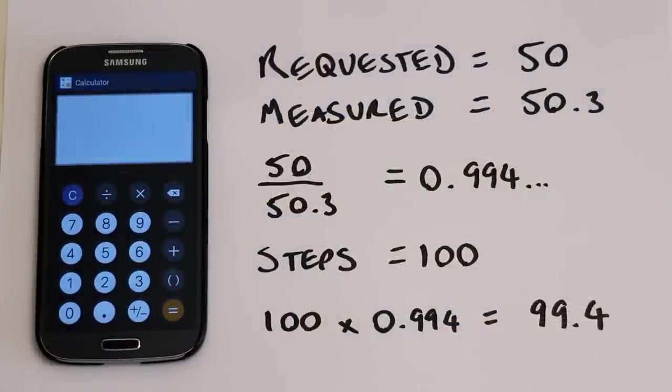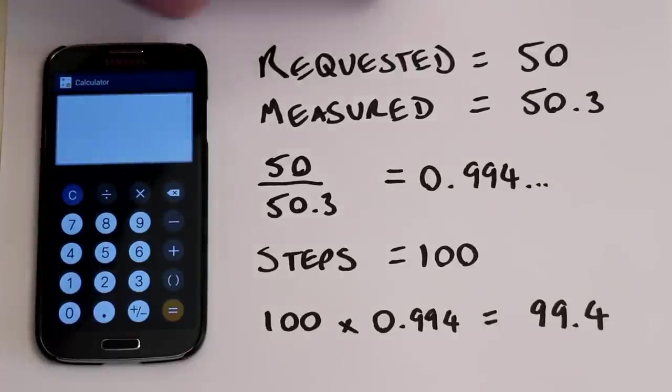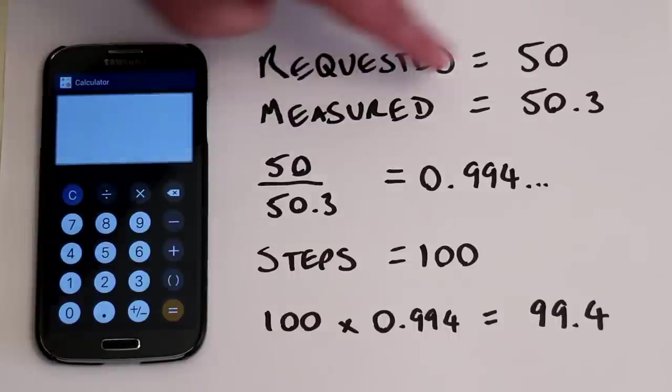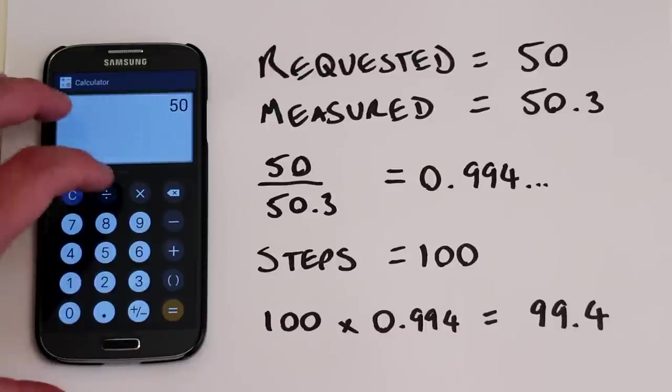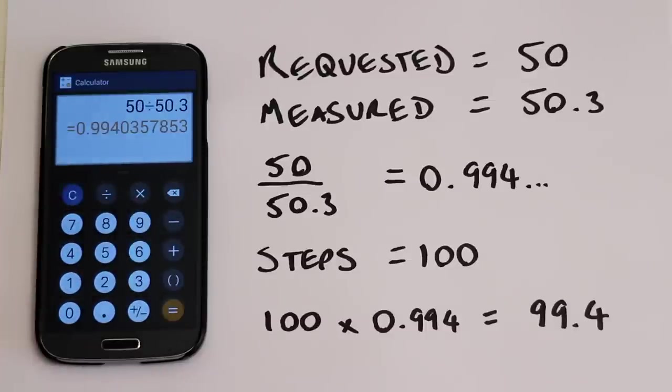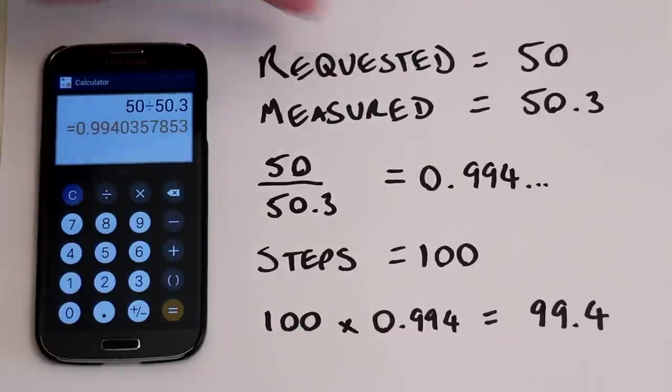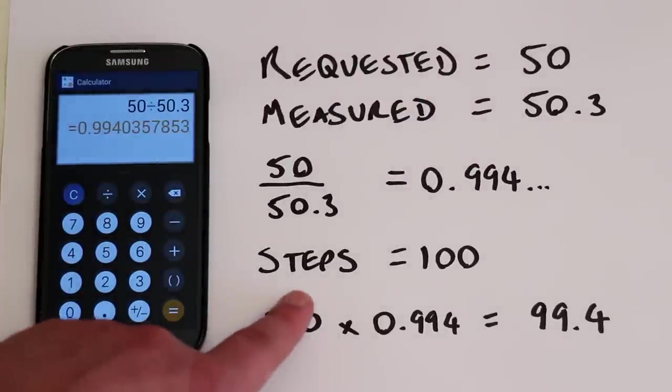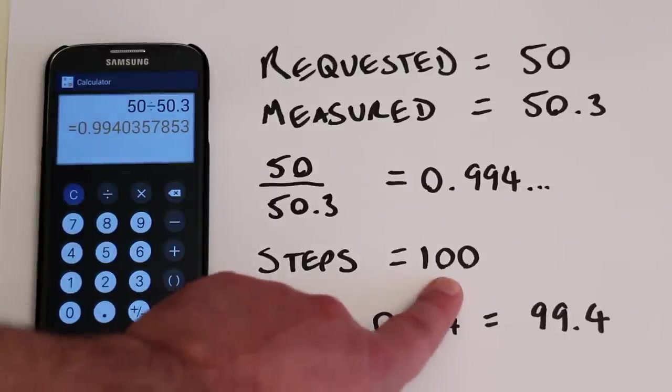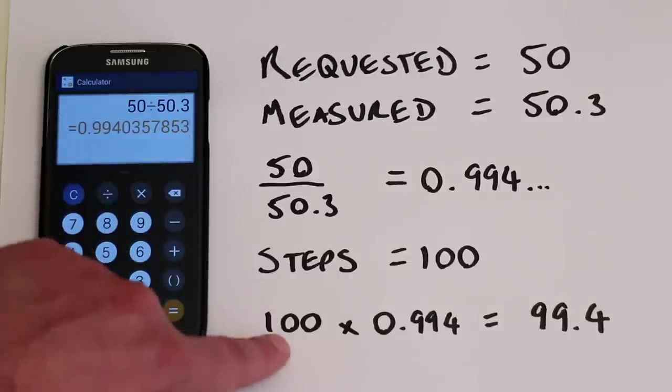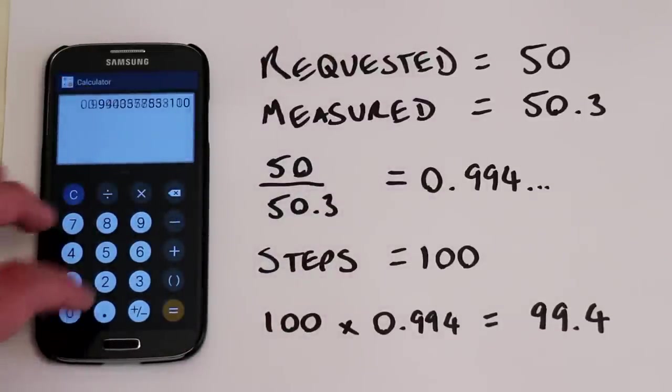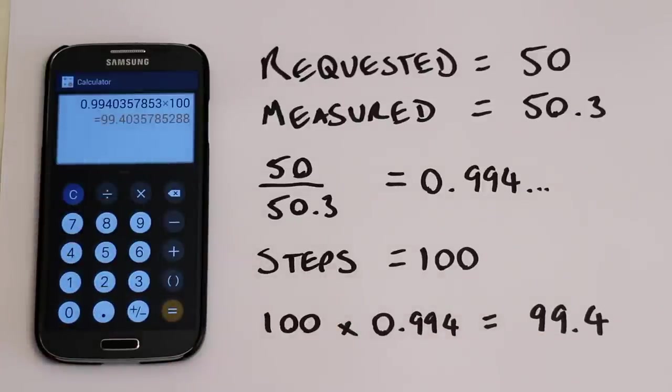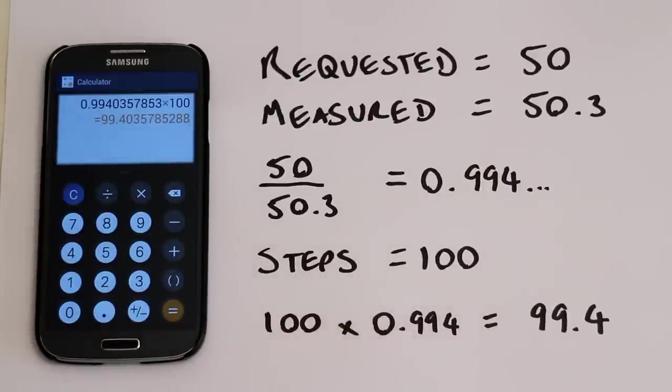To calculate the new steps that we need to insert into Marlin, we need to do a couple of quick calculations. We requested 50 mm. We measured 50.3 mm. So we divide the requested by the measured. So 50 divided by 50.3 gives us 0.994. The number of steps we currently have in the Marlin firmware is 100. So we need to times the number of steps by the difference. So that result times 100 gives us our new steps calculation. Let's go ahead and insert these new steps into Marlin.